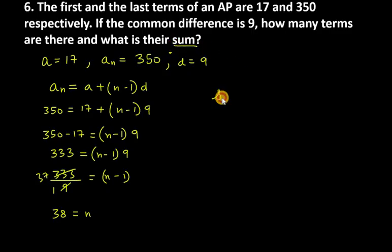The sum is S sub N, which equals S sub 38. You can use this formula: N over 2 times (a plus an).